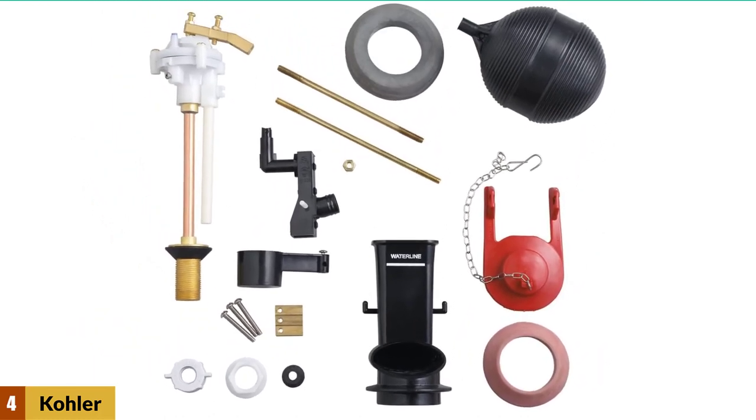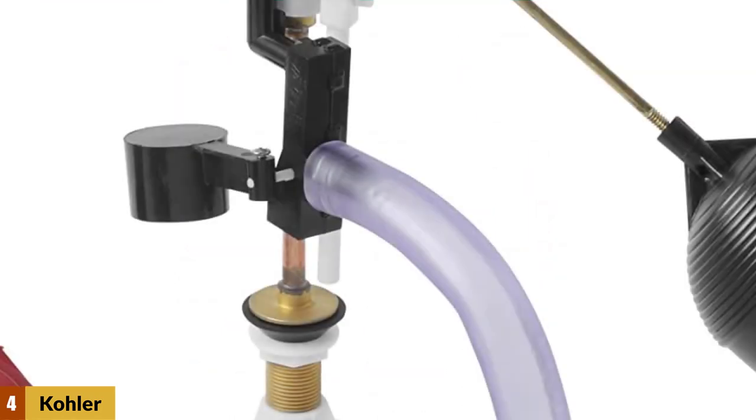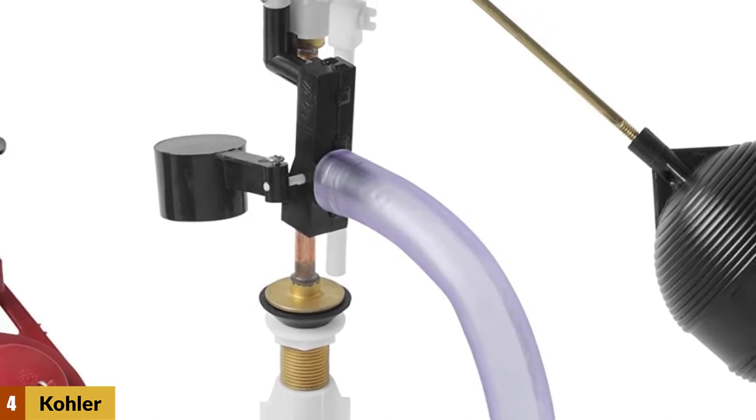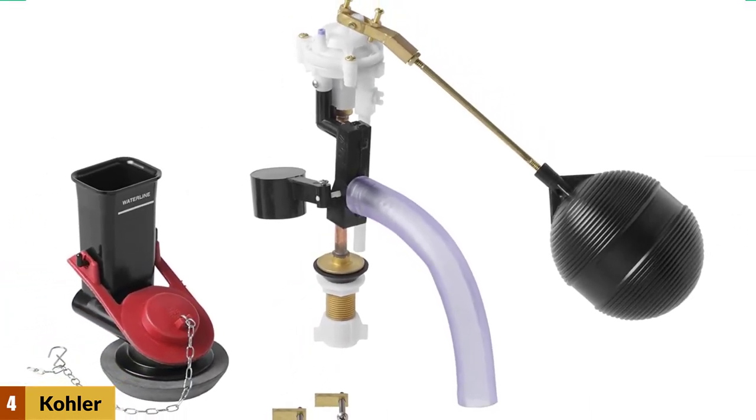It includes the fill valve, flush valve, flapper, and gaskets. Whatever is wrong with your tank, this kit will contain the right part to fix it. It is compatible with older one-piece models and is going to help your toilet run and flush properly.